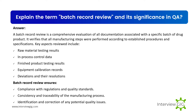Explain the term batch record review and its significance in QA. A batch record review is a comprehensive evaluation of all documentation associated with a specific batch of drug product. It verifies that all manufacturing steps were performed according to established procedures and specifications. Key aspects reviewed include raw material testing results, in-process control data, finished product testing results, equipment calibration records, and deviations and their resolutions. Batch record review ensures compliance with regulations and quality standards, consistency and traceability of the manufacturing process, and identification and correction of any potential quality issues.